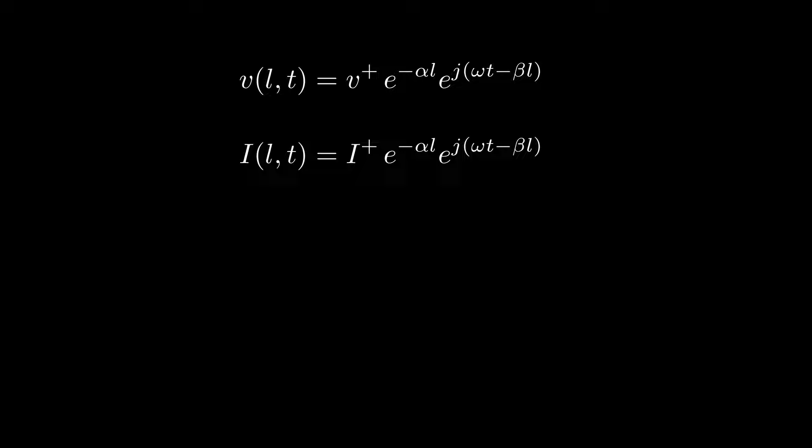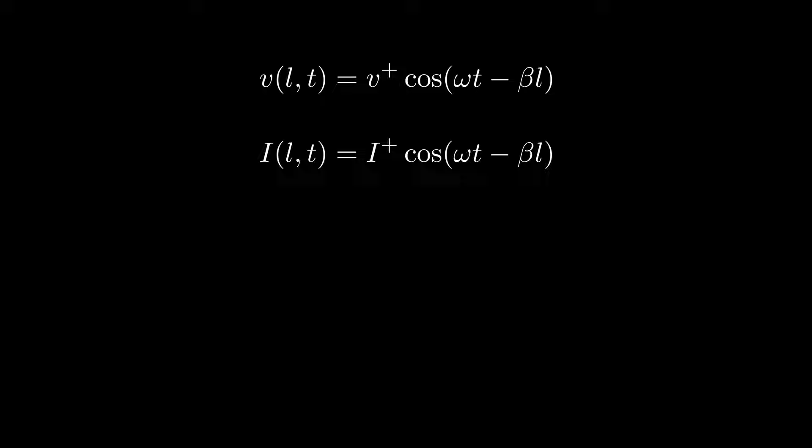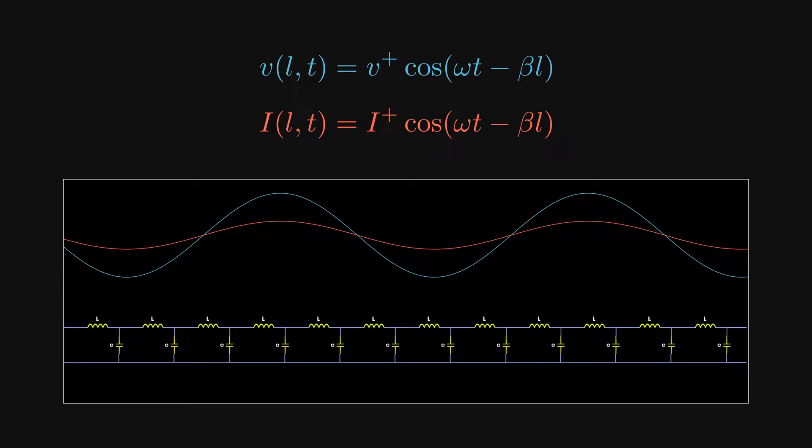Now, alpha represents the losses in the wire. Let's ignore it by ignoring R and G in each section to have a lossless line. Taking the real part, we notice that the voltage and current vary sinusoidally with respect to time and distance along the wire. Notice that the current wave is a voltage wave divided by the characteristic impedance. At each instant of time, each point in a line has different voltage and current.